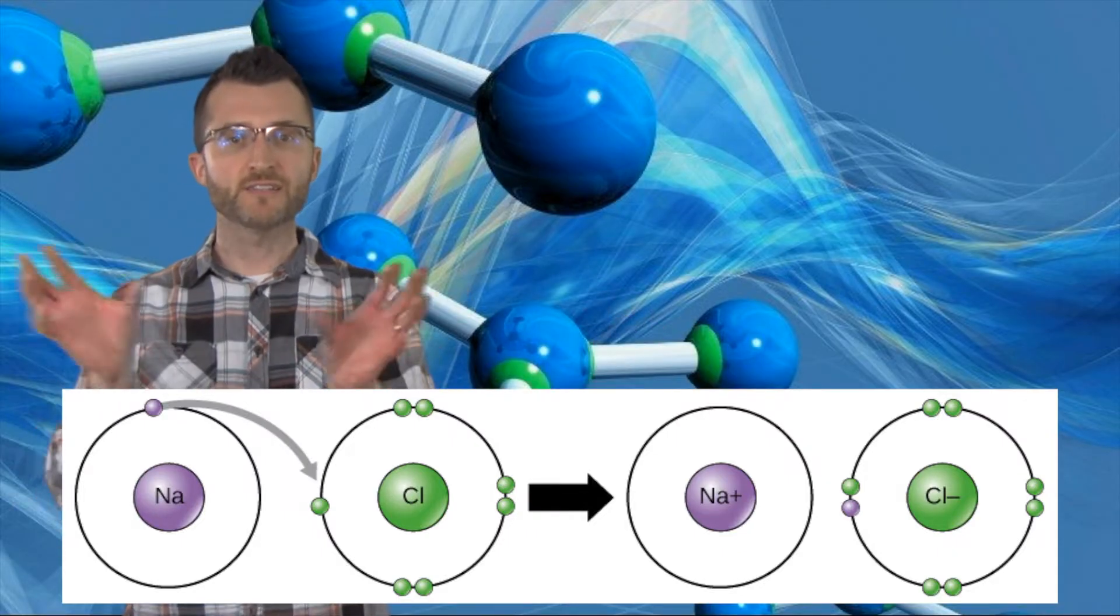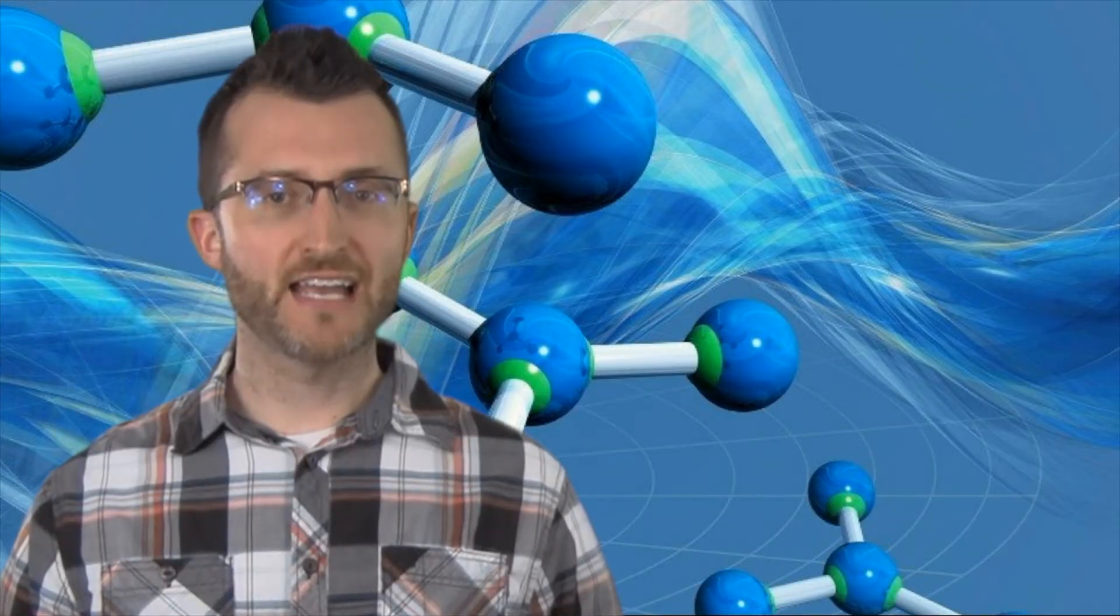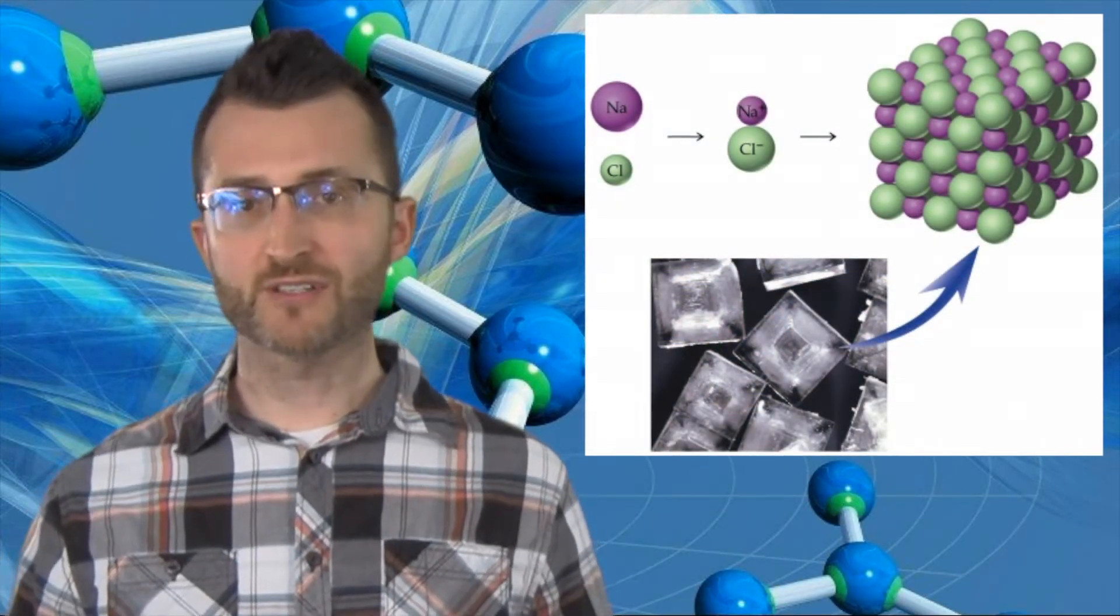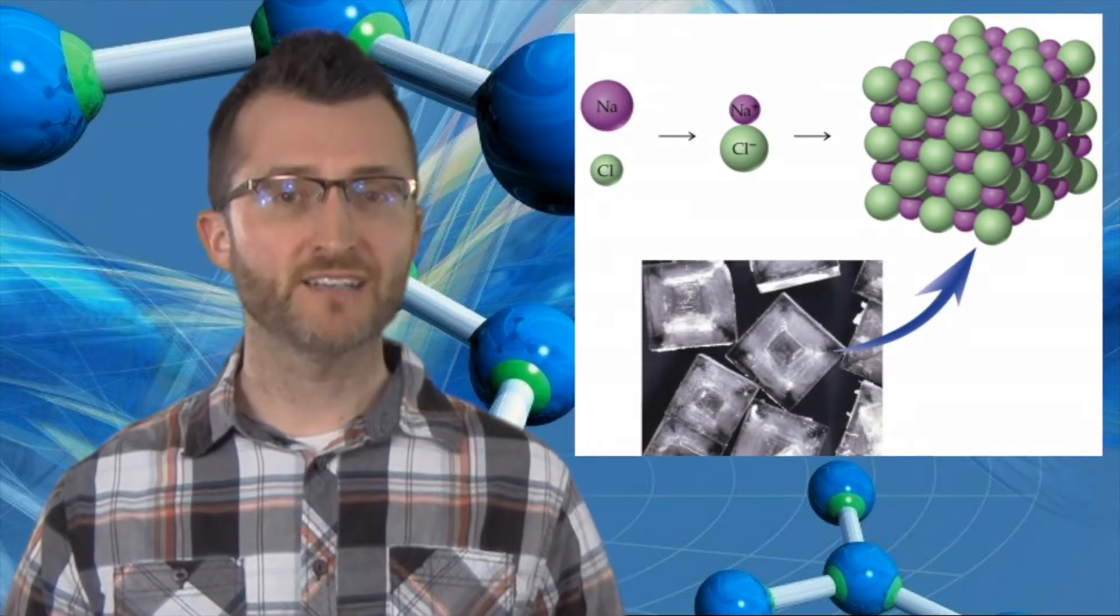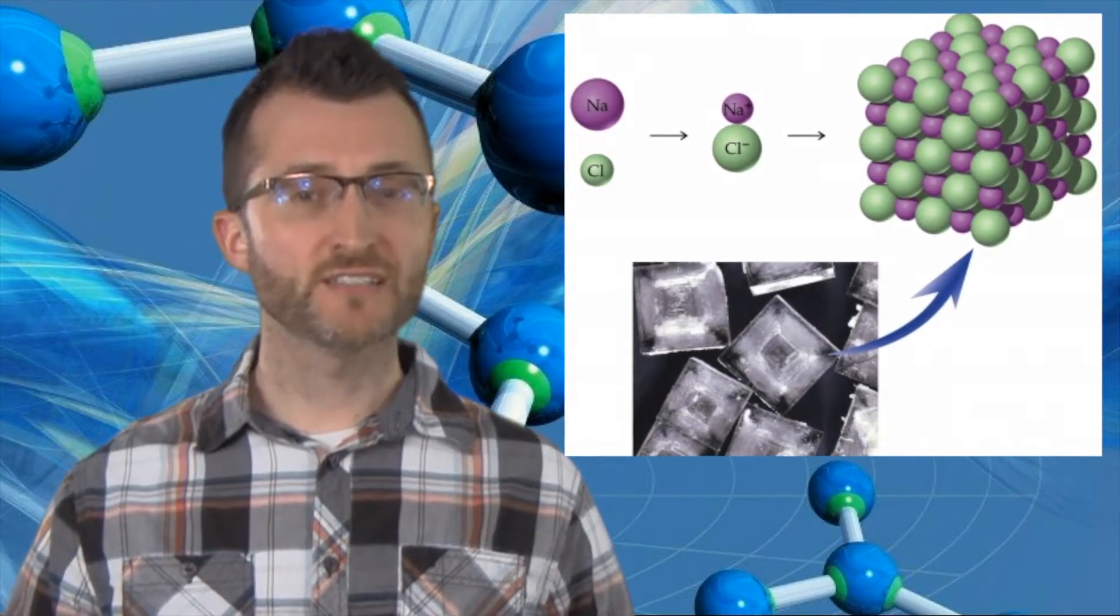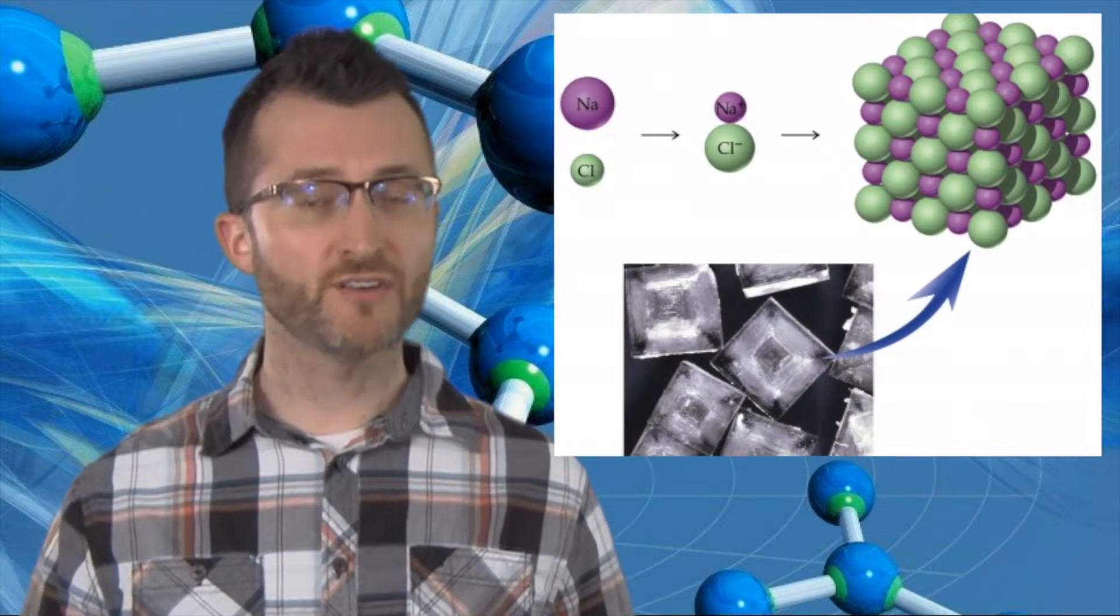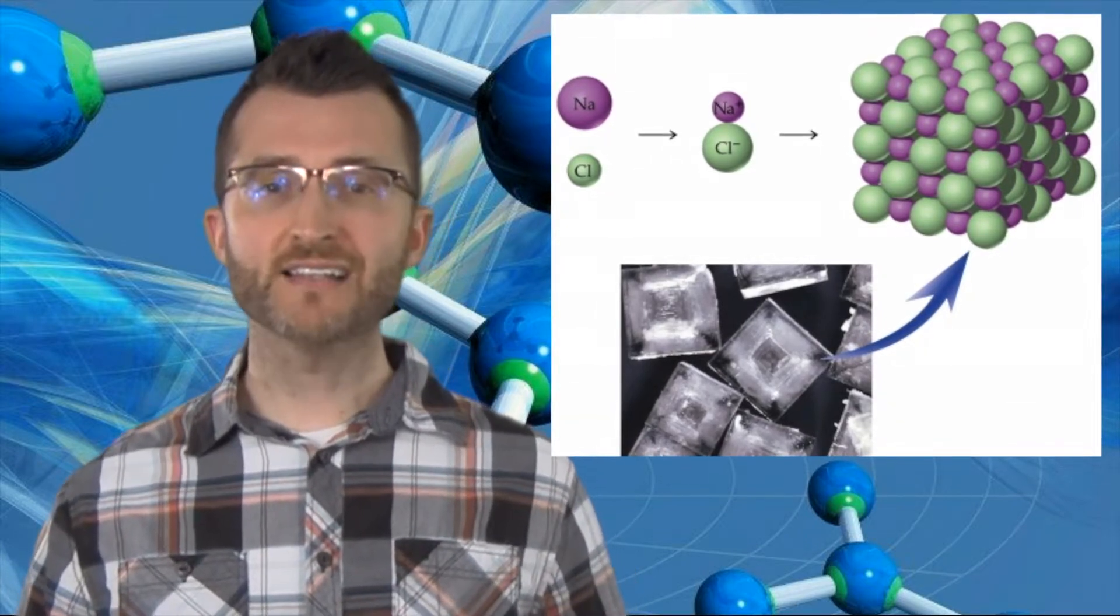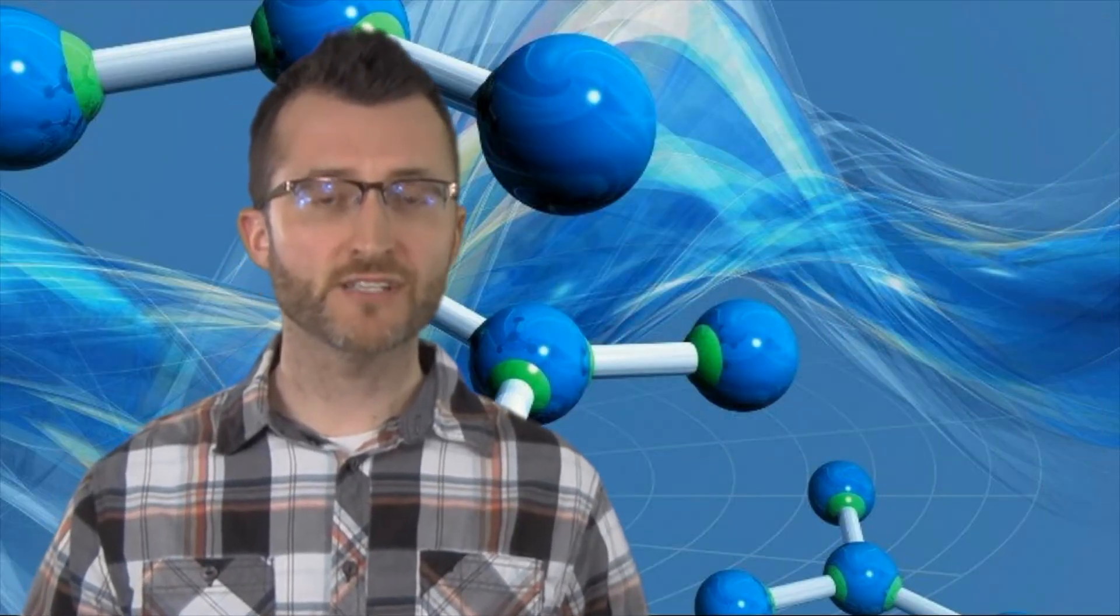When we look at a lot of these ions put together, we get what is called the crystal lattice. The crystal lattice is a repeating pattern of positive and negative ions. These ions are very tightly held together, which leads to ionic solids having very high melting points and also their brittleness. Those ions are trapped in the crystal lattice. They can't move, so they can't conduct electricity.